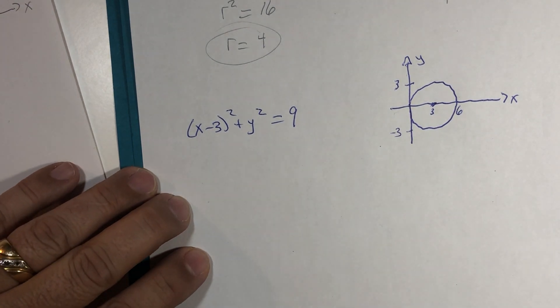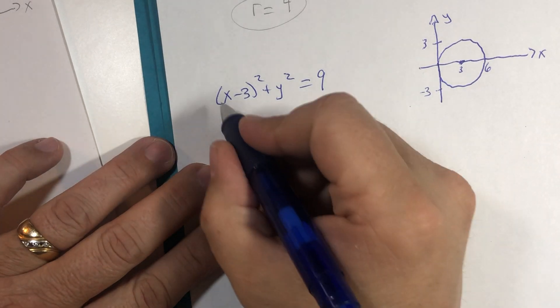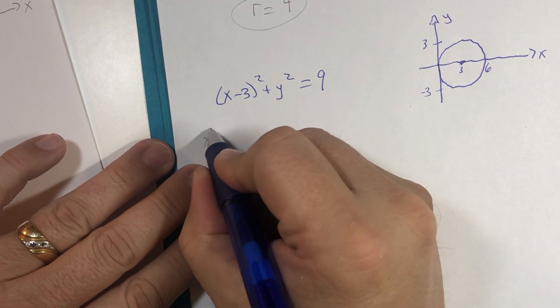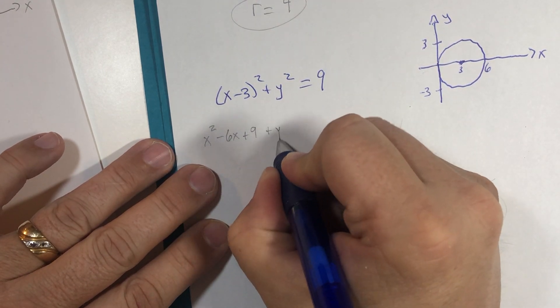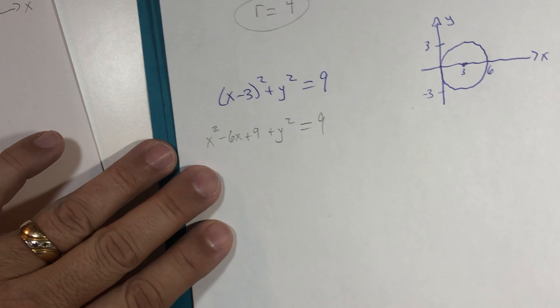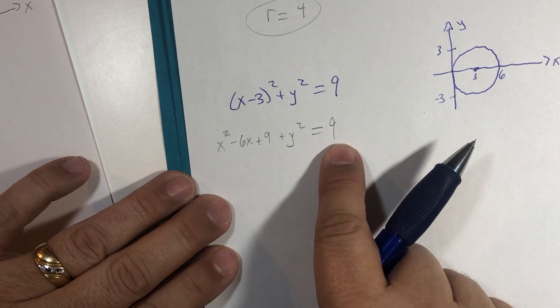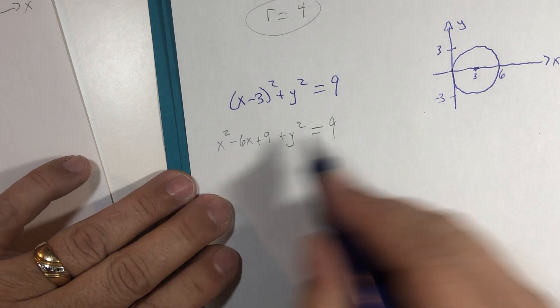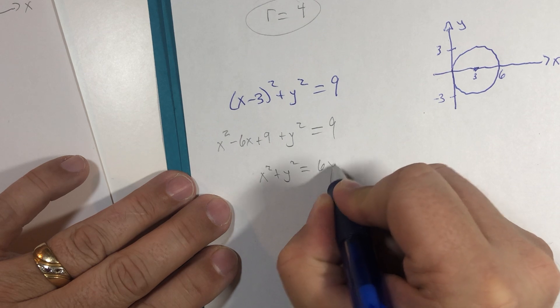A little bit of multiplication. x squared minus 6x plus 9 plus y squared equals 9. Subtract 9 from both sides. And I'm going to add the 6x. x squared plus y squared equals 6x. It would be fair to ask how come I did that, but I'm just going to do one more step to find out.